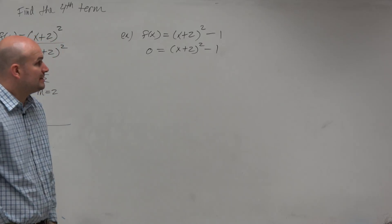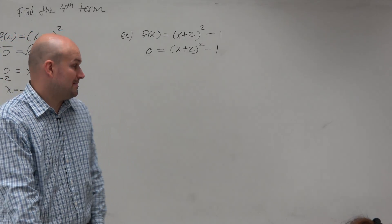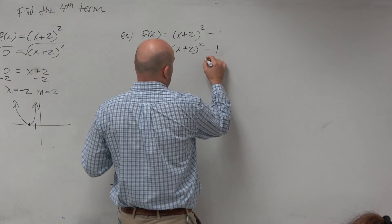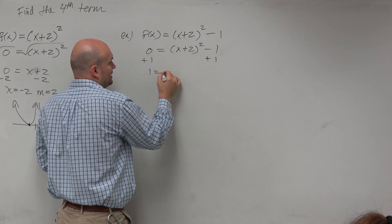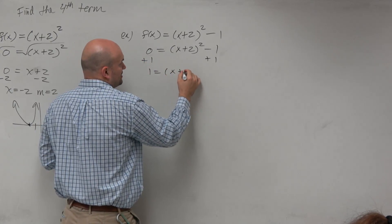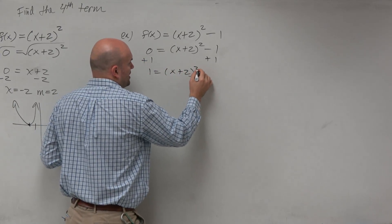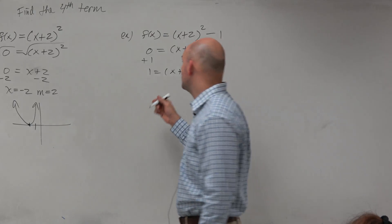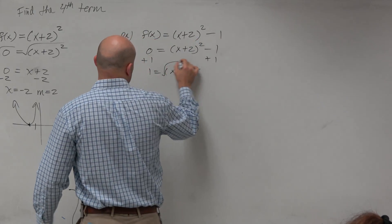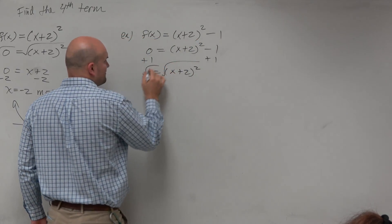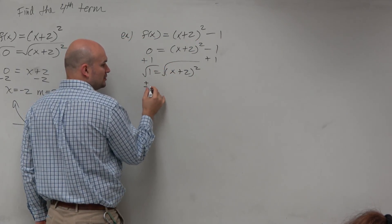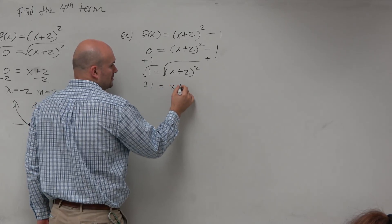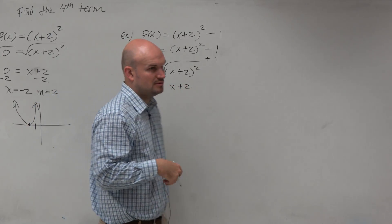Again, what we can do is we can just look at using inverse operations. If I go ahead and add the 1 to both sides, I get 1 equals x plus 2 squared. I can introduce the square root to undo the squaring. However, when I do that, I just need to make sure I include plus or minus 1 equals x plus 2.